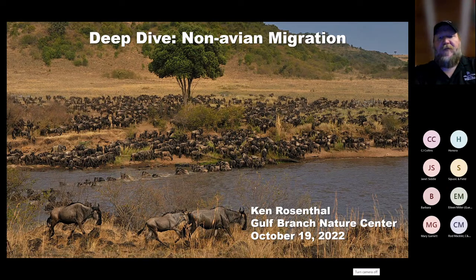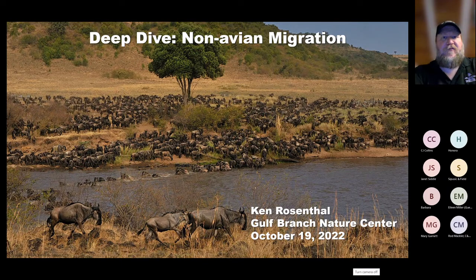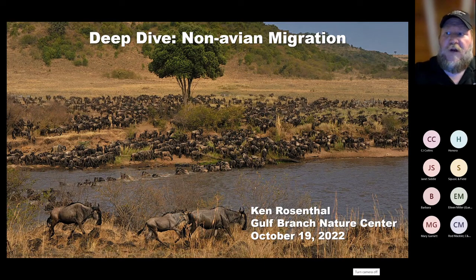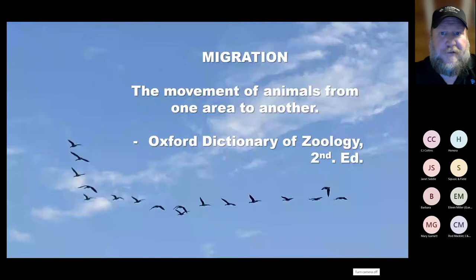Migration is the movement of animals from one area to another. When people talk about migratory animals, they're really talking about critters that are moving as a result of the season — a seasonal movement, a regular movement, predictable, happening as a result of some kind of seasonal change. It's not eruptive, which happens every few years but not every year, and it's not accidental or unexpected.